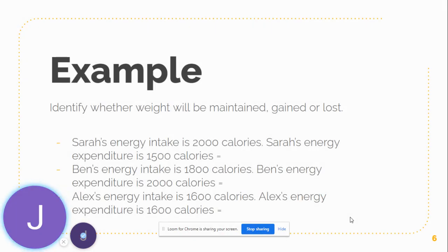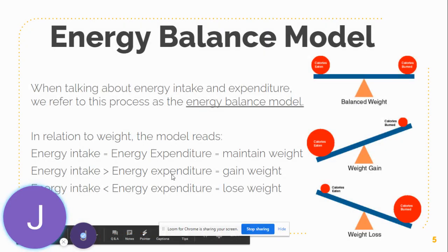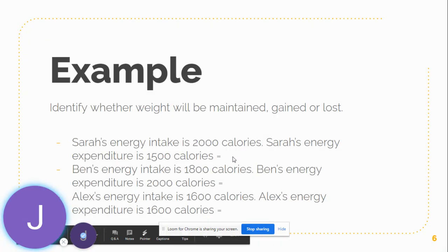Let's identify whether weight will be maintained, gained, or lost for three people. Sarah's energy intake is 2,000 calories — she's consuming 2,000 calories of food per day. Her energy expenditure is 1,500 calories. So her intake is more than her expenditure, meaning she is consuming more calories than she is burning. Referring back to the model, her energy intake is more than her energy expenditure, therefore she's going to gain weight.